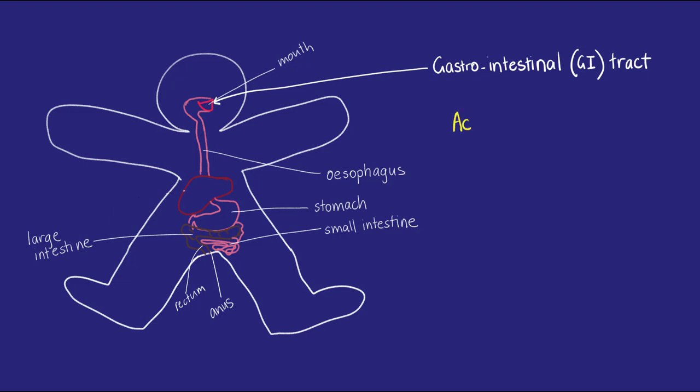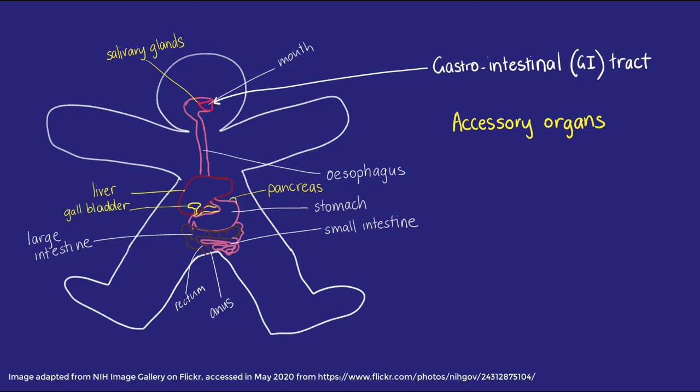There are also some accessory organs. In humans, the important ones are the salivary glands, the liver, the pancreas, and the gallbladder. They provide specialized functions, including producing digestive juices, which aid digestion.